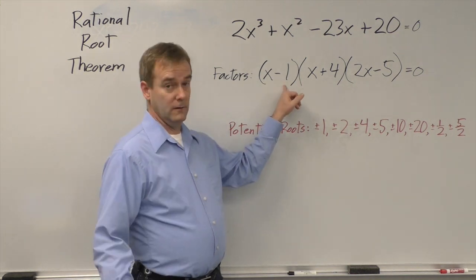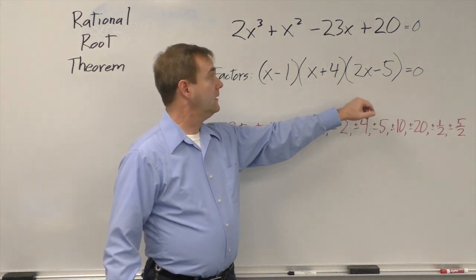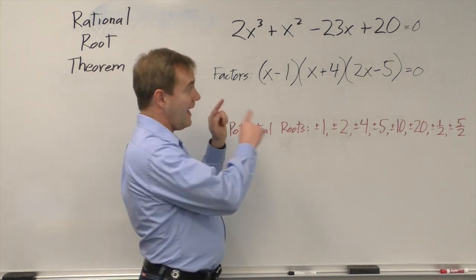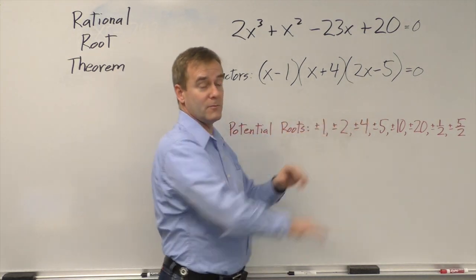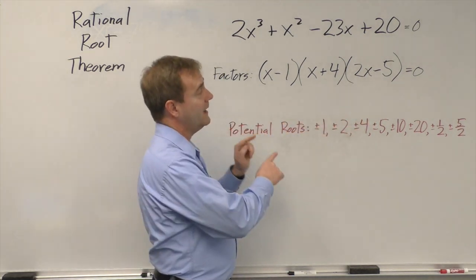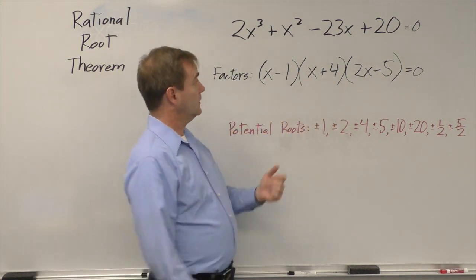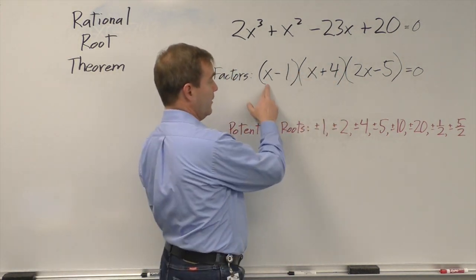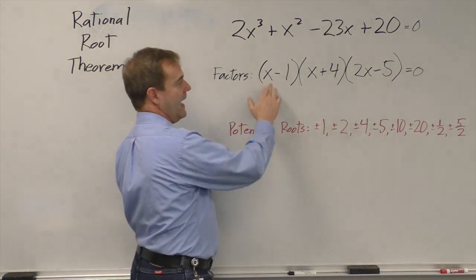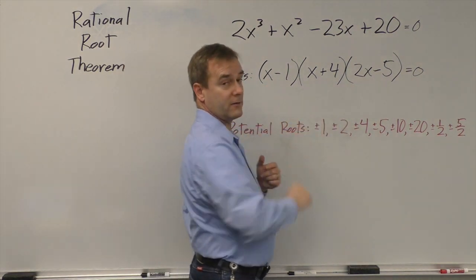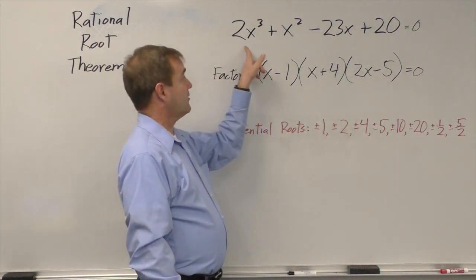Take a look at these last numbers of the correct factors. Look at what they multiply to make. 1, negative 1, times 4, times negative 5, makes positive 20. Those last bits, those last constant terms in each of those linear terms multiplied to make the last term. Look at the front. Now, the fronts of each of these binomials, x times x times 2x, multiplied together, got us to 2x cubed.